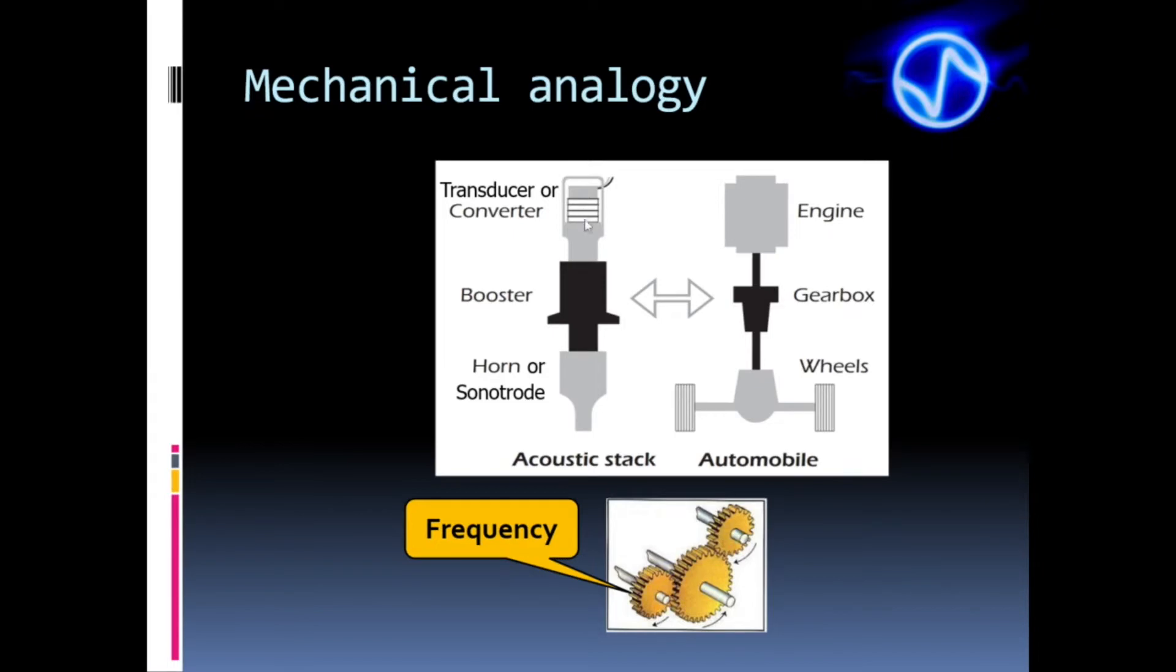While a transducer converts electrical energy into mechanical vibrating energy, the engine converts chemical energy from fuels into movement. The booster is also similar to the gearbox of the car. The booster is responsible for adjusting the proportion between force and amplitude of vibration, while the gearbox is responsible for controlling the ratio between torque and speed of the car.